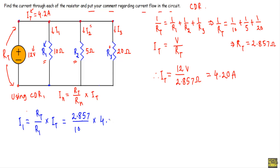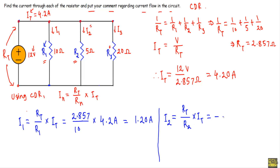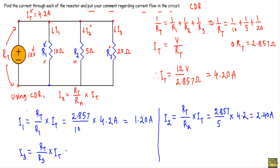Next, the current through R2 is I2 = Rt/R2 × It = 2.857/5 × 4.2 = 2.40 amperes. The current through R3 is I3 = Rt/R3 × It = 2.857/20 × 4.2 = 0.6 amperes.